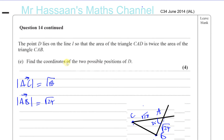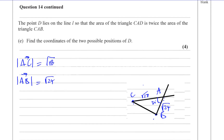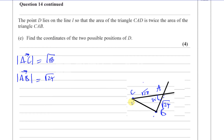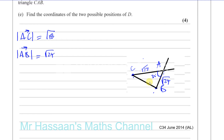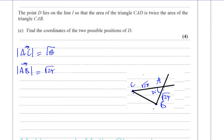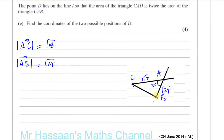For question 14 part E from C34 June 2014: point D lies on the line L so that the area of triangle CAD is twice the area of triangle CAB. We need to find the coordinates of the two possible positions of D. Triangle CAB is the triangle shown here, and CAD has to be twice its area.